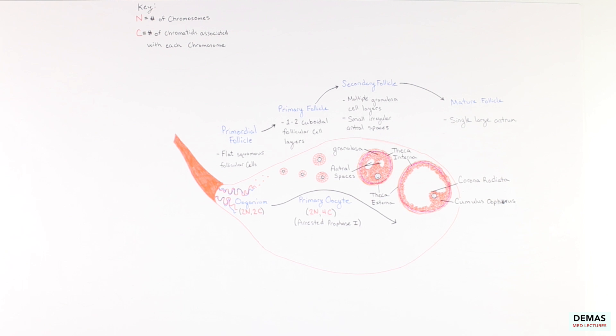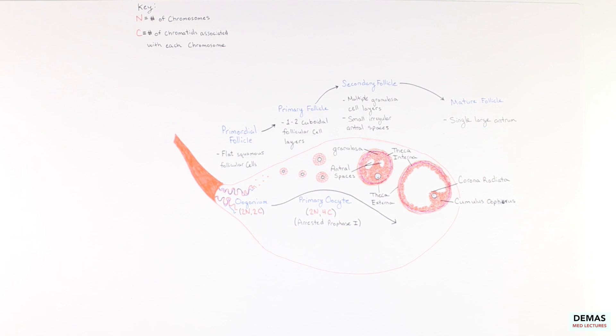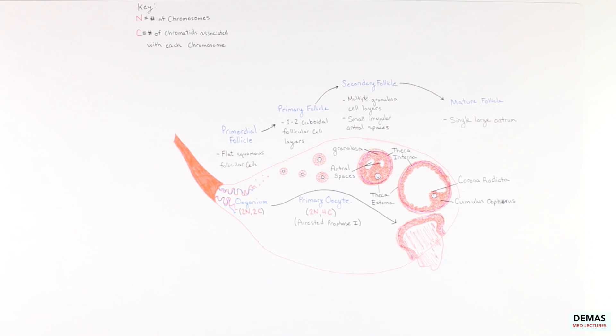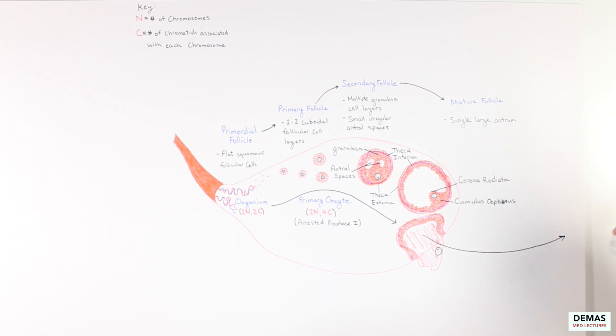During each menstrual cycle, a small number of primary oocytes and their accompanying follicle mature and the oocyte completes meiosis I right before ovulation, resulting in the formation of a secondary oocyte.